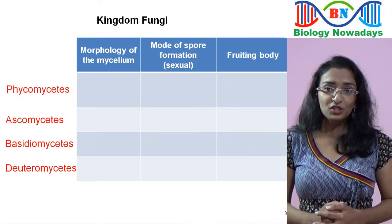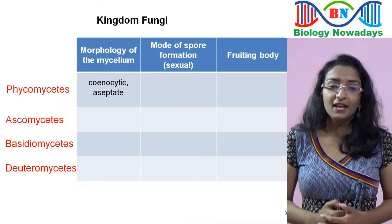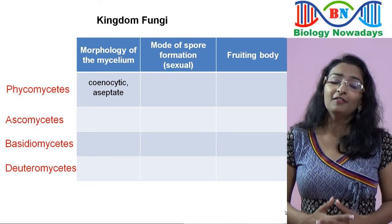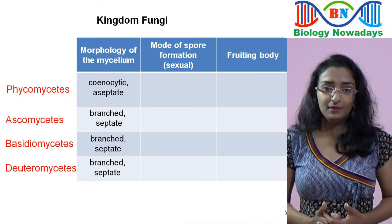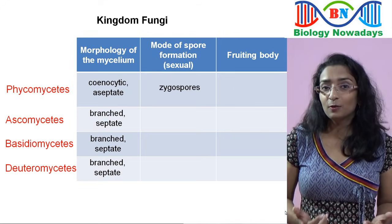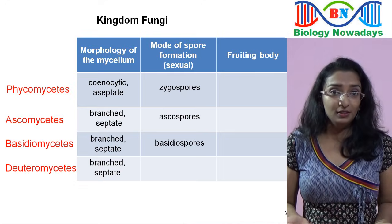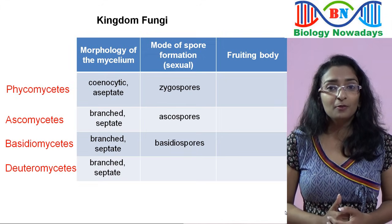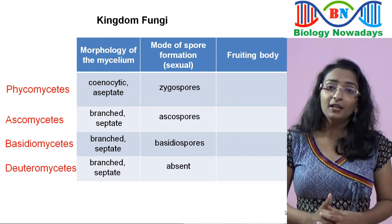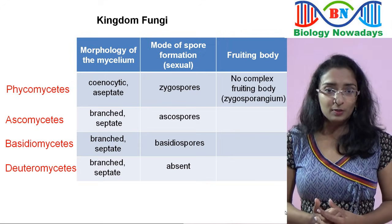The first group, the Phycomycetes, have branched and aseptate hyphae — aseptate means without septa or cross walls — while the other groups have branched and septate hyphae. In Phycomycetes, sexual spores are called zygospores. In Ascomycetes, they are called ascospores. The members of Basidiomycetes form basidiospores, while in Deuteromycetes, sexual spores are absent. Regarding fruiting bodies: in Phycomycetes there is no complex fruiting body and the zoospores are formed in sporangia; in Ascomycetes the fruiting body is an ascocarp which is cup-shaped; in Basidiomycetes the fruiting body is a basidiocarp; while in Deuteromycetes the fruiting body is absent.